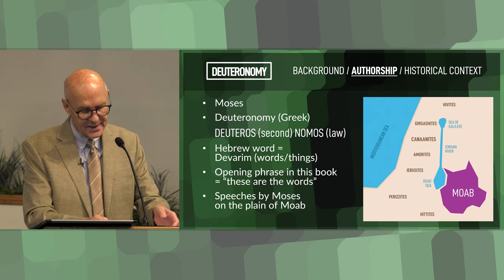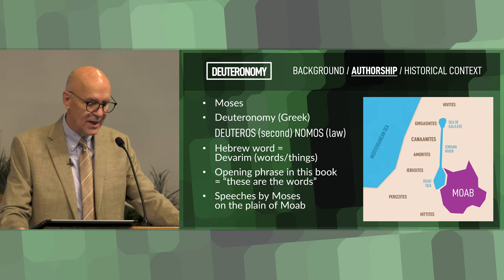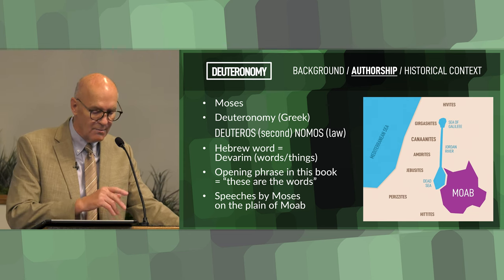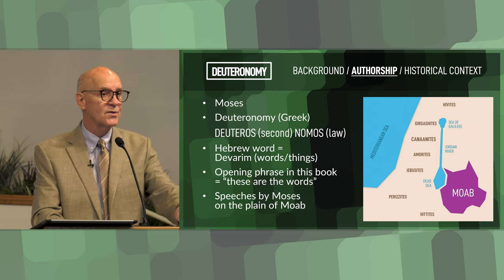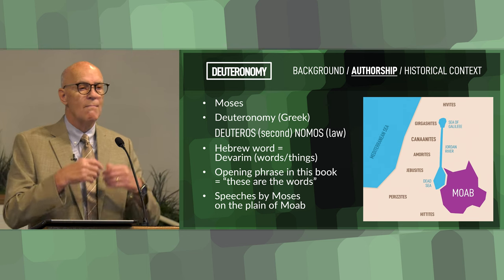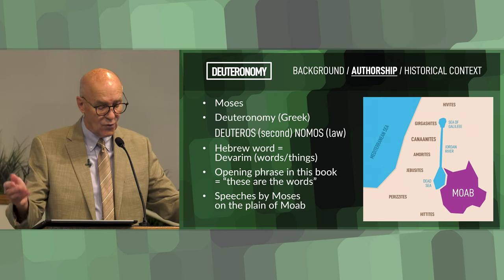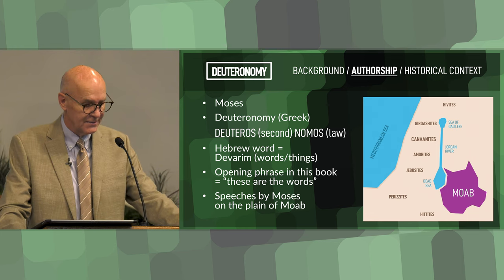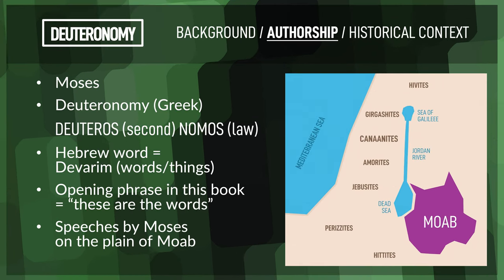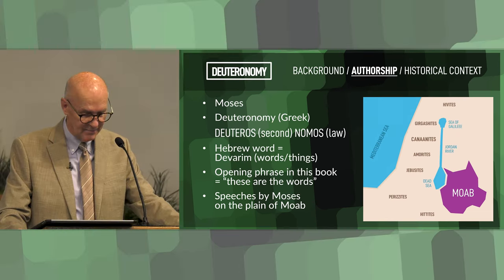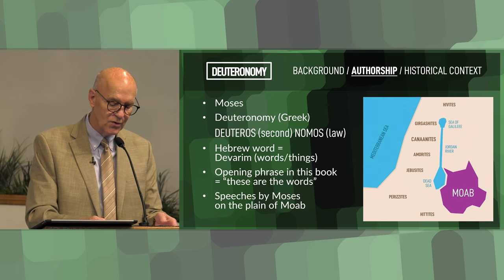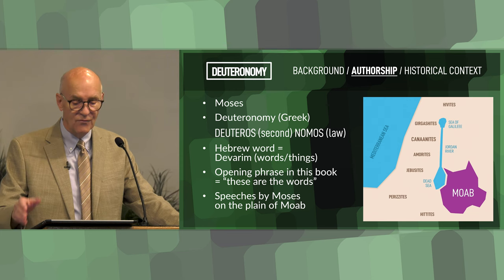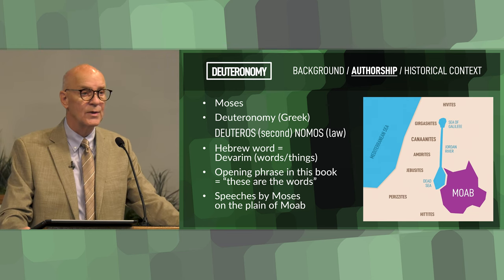This title reflects the book's content, which includes a restatement and explanation of the laws given to the Israelites in earlier books of the Pentateuch, particularly as they are preparing to enter the promised land. So they're poised to enter Canaan, and in Deuteronomy, Moses is reviewing the things he's taught them over the 40 years in the wilderness. The Hebrew title for the book is Devarim, meaning 'words' or 'things,' derived from the opening phrase Ele Ha Devarim — 'these are the words' — referring to Moses's speeches on the plains of Moab.